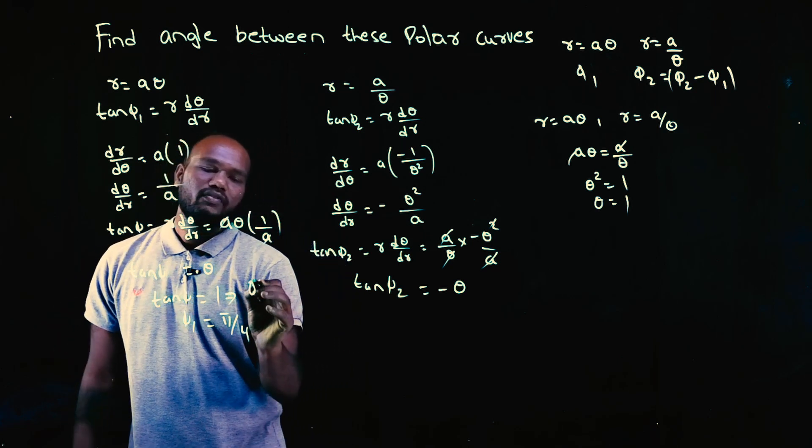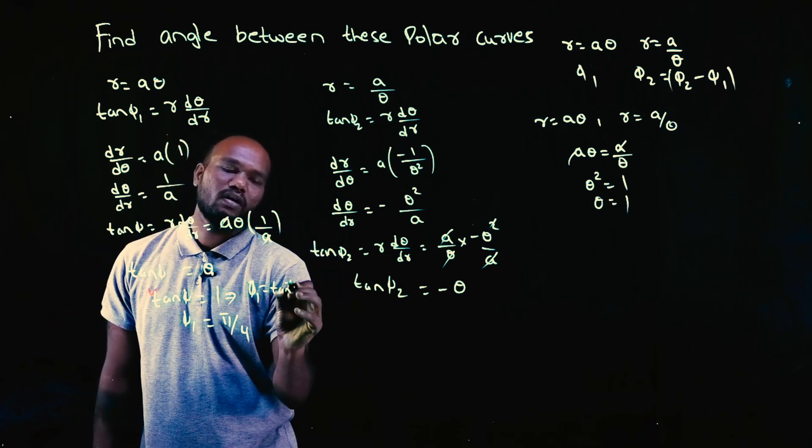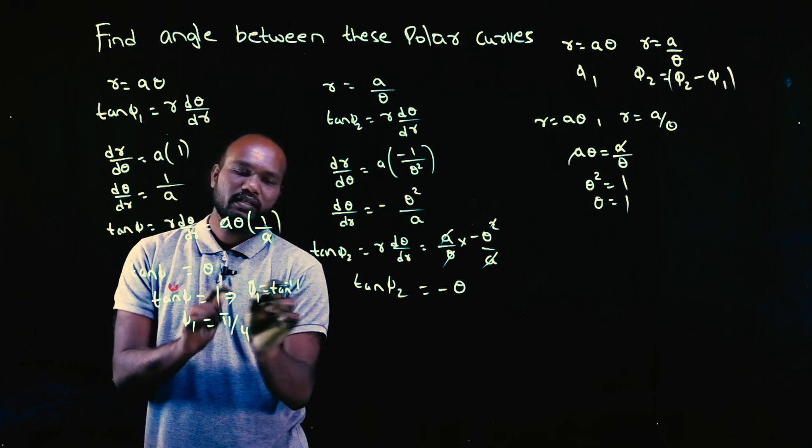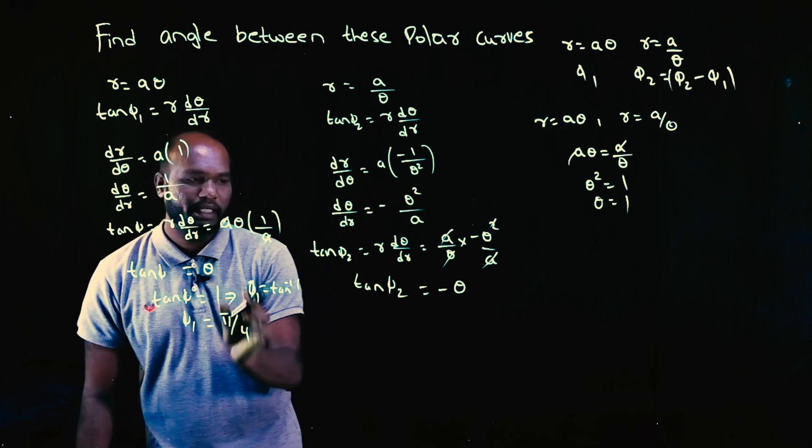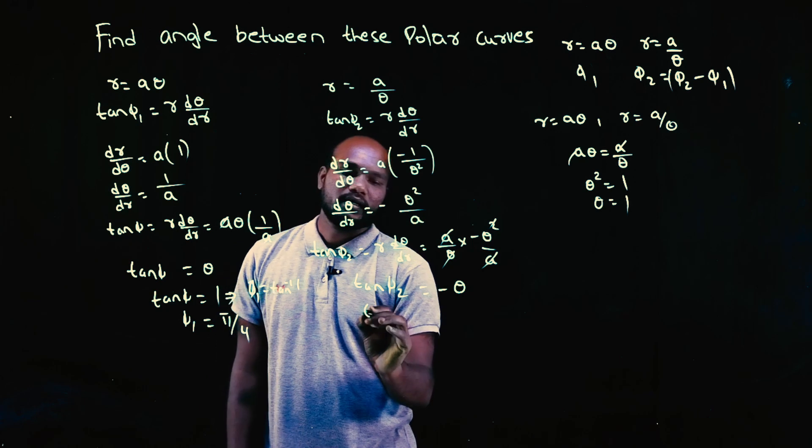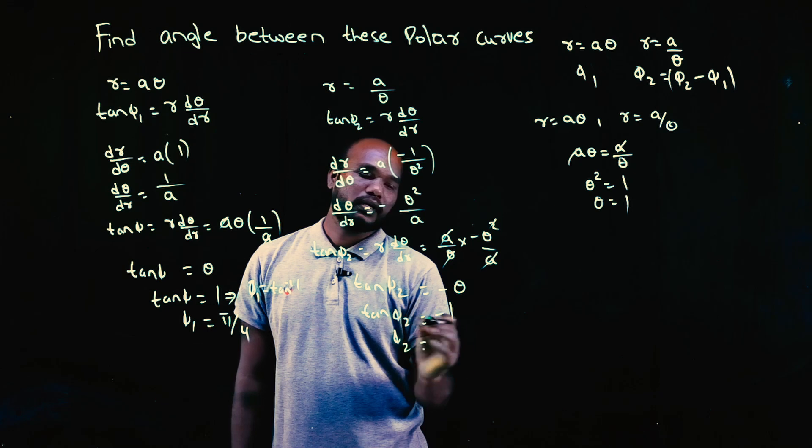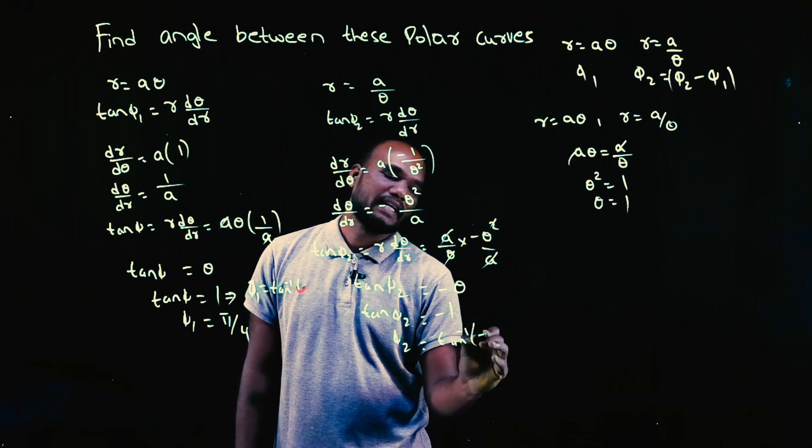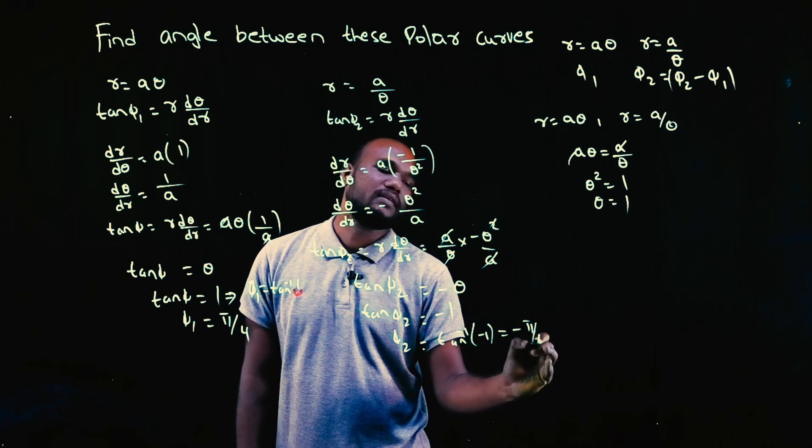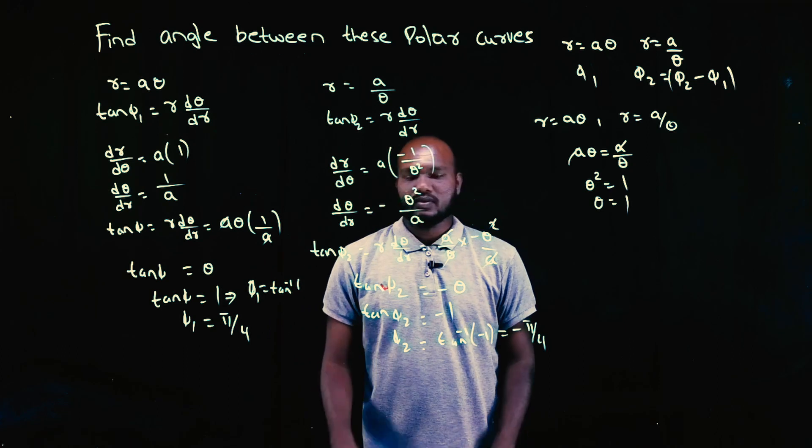If it goes from here to here, this will become tan inverse. Tan inverse of 1 is π/4. In the same way, tan φ₂ = -1. φ₂ = tan inverse of -1. Again you can calculate this in a calculator, you'll get -π/4.